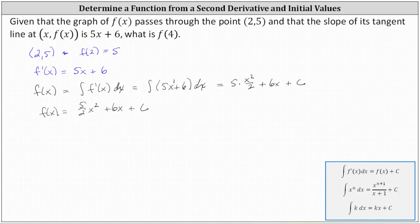But we also know that f(2) must equal 5. So if f(2) must equal 5, if we substitute 2 for x, the function value must equal 5, which gives us the equation (5/2) times the square of 2 plus 6 times 2 plus c must equal 5.